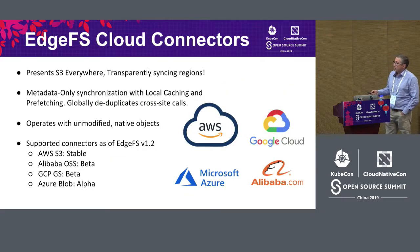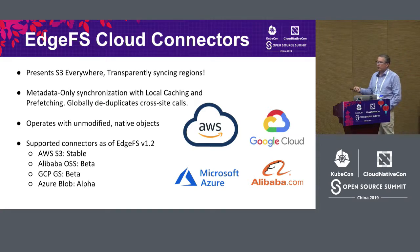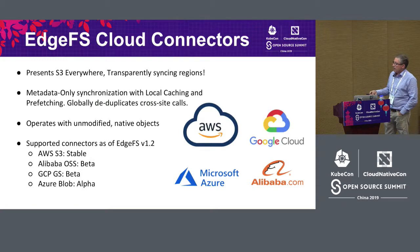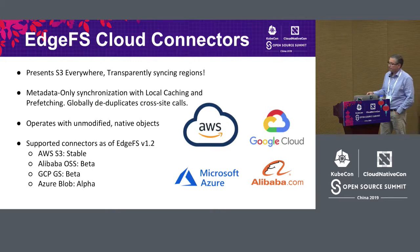A bit more about the EdgeFS cloud connectors. When talking about cloud, we're talking about S3 everywhere, transparently syncing regions. Metadata-only synchronization with local caching is critically important to avoid paying double or triple costs across connected sites. We currently support AWS, Google Cloud, Microsoft Azure, and Alibaba. Most importantly, it operates with unmodified native objects — an S3 object in AWS can be seen as an OSS object in Alibaba and vice versa. You can set up synchronization with just metadata so you don't need to actually move the data.